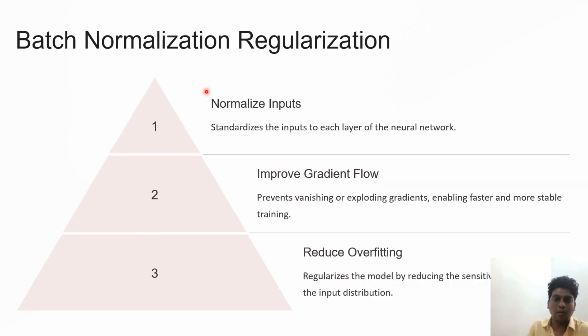Batch normalization: standardize inputs to each layer of the neural network during deep learning training, which helps prevent vanishing and exploding gradients, and reduces overfitting.